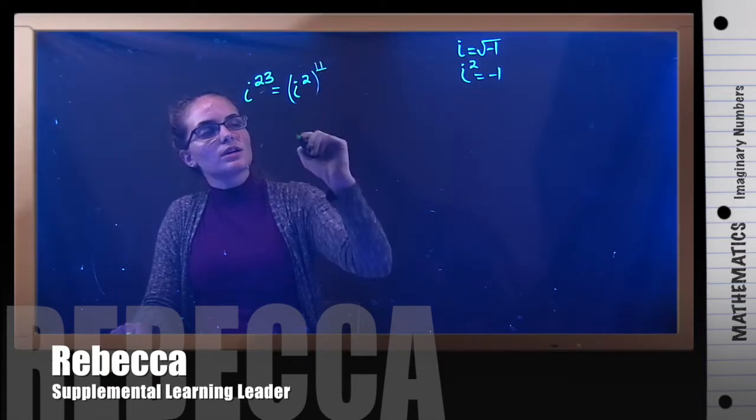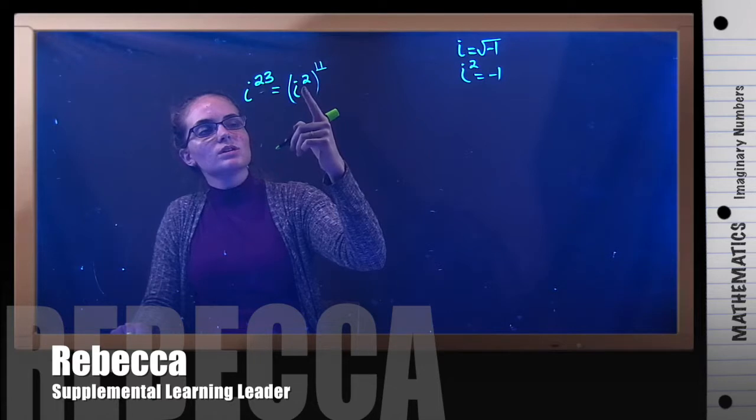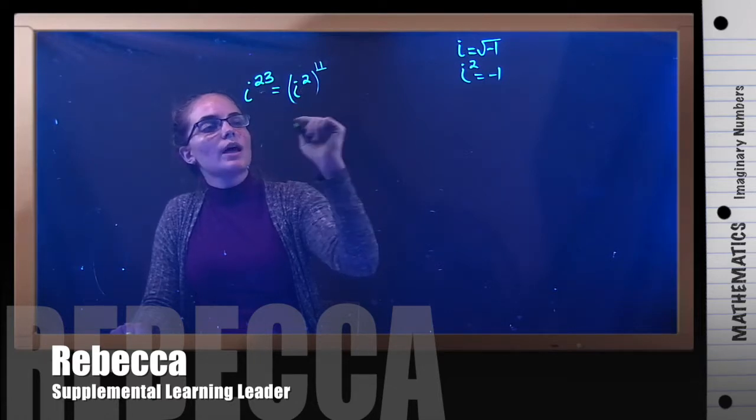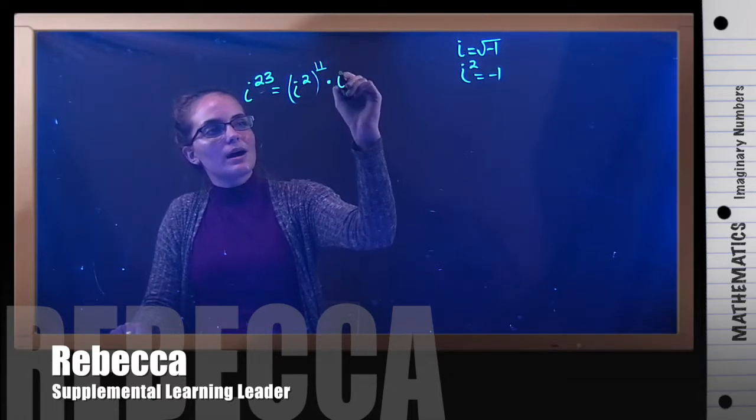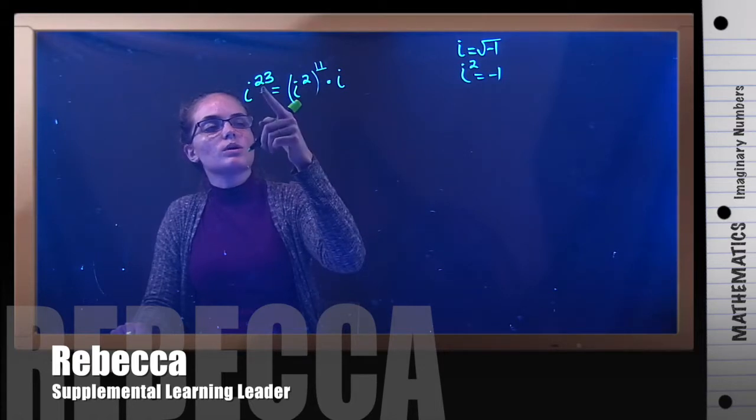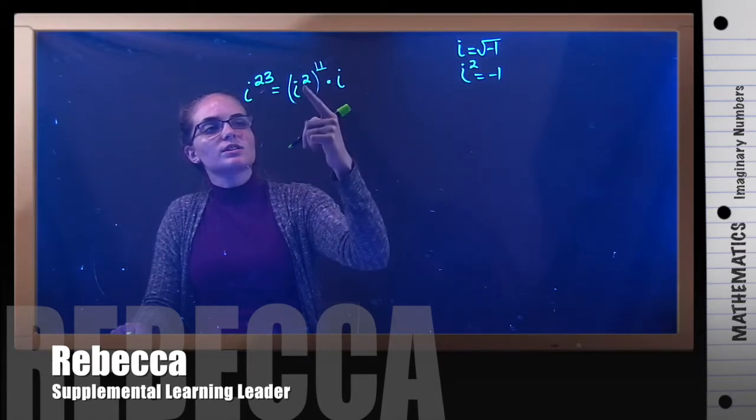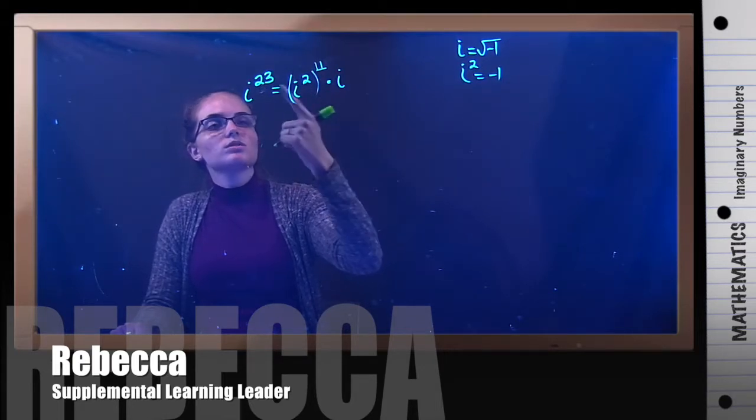If I use 11 here, 11 times 2 is 22, and then I can multiply by i, and that will give me the 23. So 11 times 2 is 22, plus 1 is 23.